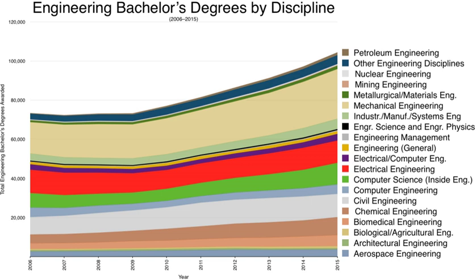UCTEA maintains its activities with 23 chambers, 194 branches of its chambers, and 39 provincial coordination councils. Approximately graduates of 70 related academic disciplines in engineering, architecture, and city planning are members of the chambers of UCTEA.